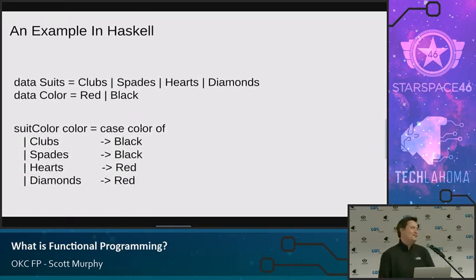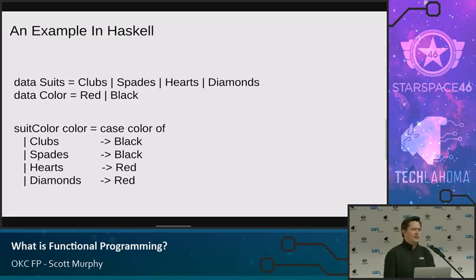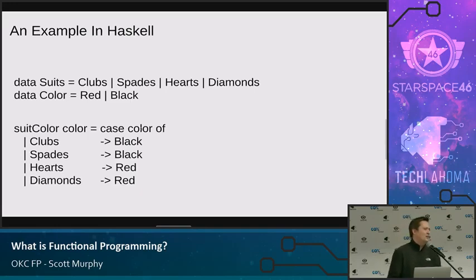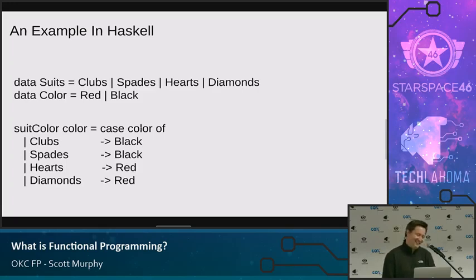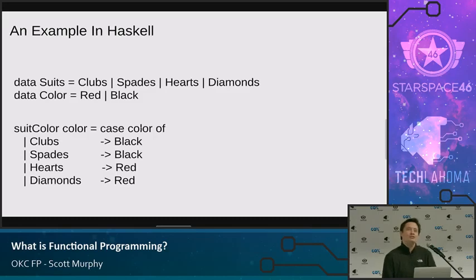I'm going to do a very simple example of proving a function. Raise your hand if you ever had to do any proofs in your CS courses or on your own. I see like four hands up. This isn't going to be complicated — you're going to be very happy with this proof. So, we have several suits: clubs, spades, hearts, and diamonds, and then we have colors red and black. We're going to write a program that tells you what color your suit is based on what suit it is.